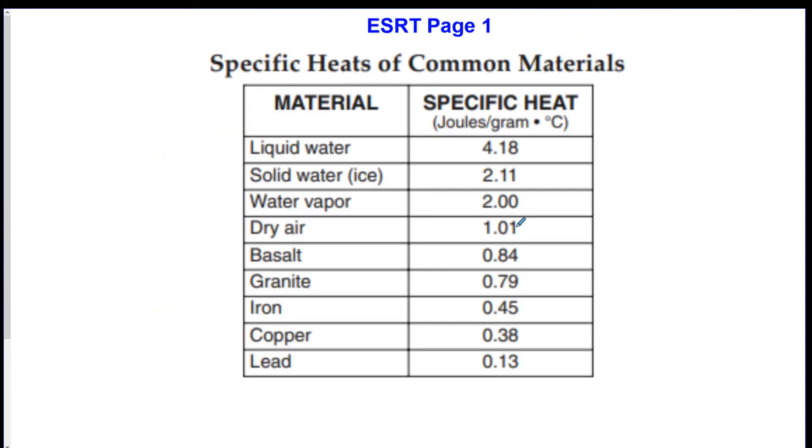Going on to the next page. This page here, on page 1, shows a chart for specific heat of common materials. Specific heat means how fast or slow something heats up or cools down. So normally, the more joules, or heat energy, required would mean that the object or substance takes longer to heat up. So liquid water is going to take longest to heat, and it's also going to take longest to cool. And then that would mean lead takes the shortest to heat, and the shortest to cool, because it has a lower number.